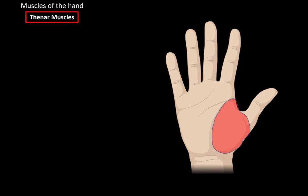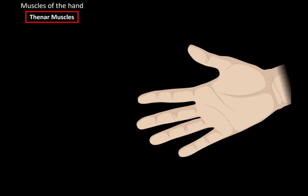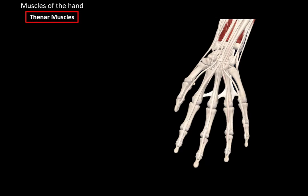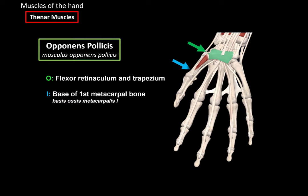The thenar muscles consist of four muscles: Abductor Pollicis Brevis, Opponens Pollicis, Flexor Pollicis Brevis, and Adductor Pollicis. Let's turn the hand and remove a couple of layers until we get to the bone. Opponens Pollicis is this muscle right here. It originates from the Flexor Retinaculum and the Trapezium bone of the wrist. The Flexor Retinaculum is a band of connective tissue formed by the fascia of the lower arm. This muscle inserts at the base of the first metacarpal bone, and its function is opposition and flexion of the thumb — pulling the thumb towards the little finger.